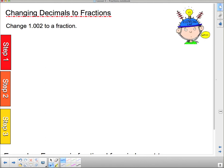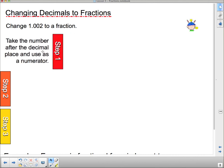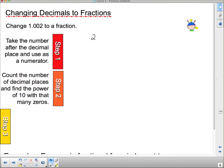Now, changing decimals to fractions. I want to change 1.002 to a fraction, and I've got a few steps for you to follow here. Step 1, take the number after the decimal place and use it as a numerator. So, the number after the decimal, and we're not going to put the zeros in here, the number after the decimal is 2. What's the next step? The next step says, count the number of decimal places and find the power of 10 with that many zeros. So, we've got 1, 2, 3 decimal places.